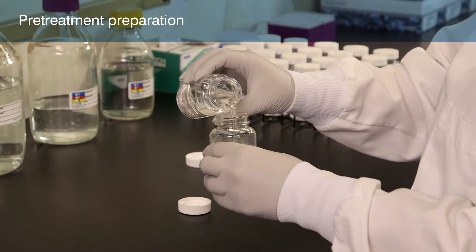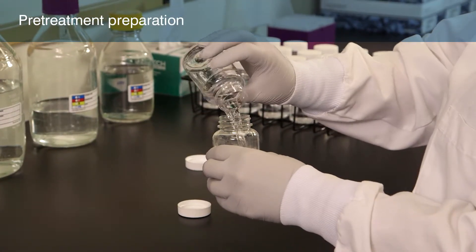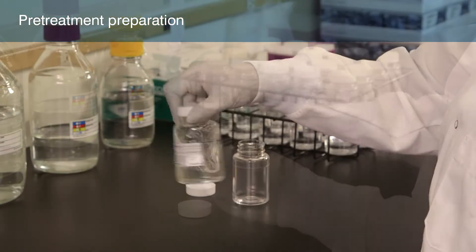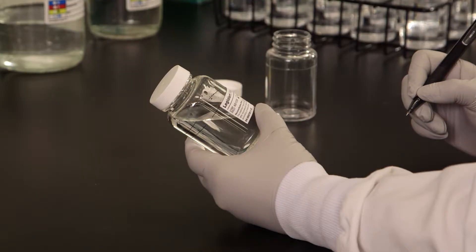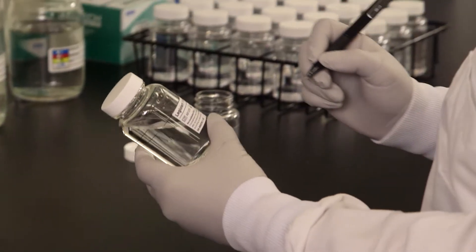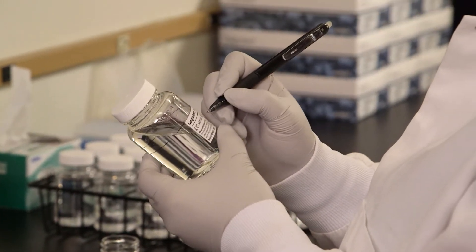Reconstitute the LEG-ALERT pretreatment by adding 100 mL of sterile DI water to the vessel and then shake until fully dissolved. Mark the preparation date on the bottle. Refer to the LEG-ALERT pretreatment product insert for more information.